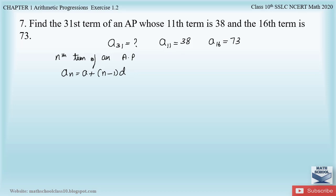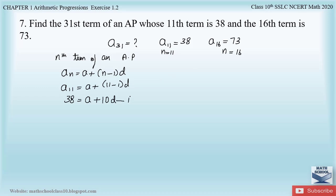They have told us the 11th term is 38, so let us substitute into the formula. a₁₁ = a + (11 - 1) × d, which gives 38 = a + 10d. Let this be equation 1. Similarly, substituting a₁₆ = 73: 73 = a + (16 - 1) × d, which gives 73 = a + 15d. Let this be equation 2.